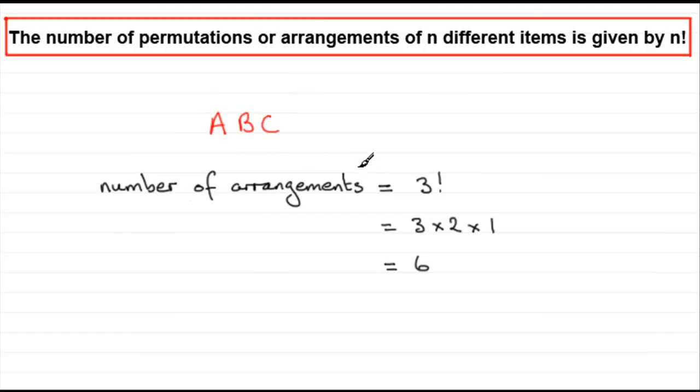and the number of arrangements would be n factorial. In this case n was 3 because you have three different letters, and 3 factorial was short for 3 times 2 times 1, and it comes to 6. Those arrangements or permutations are listed here, and I used the method of tree diagrams to illustrate this to you.